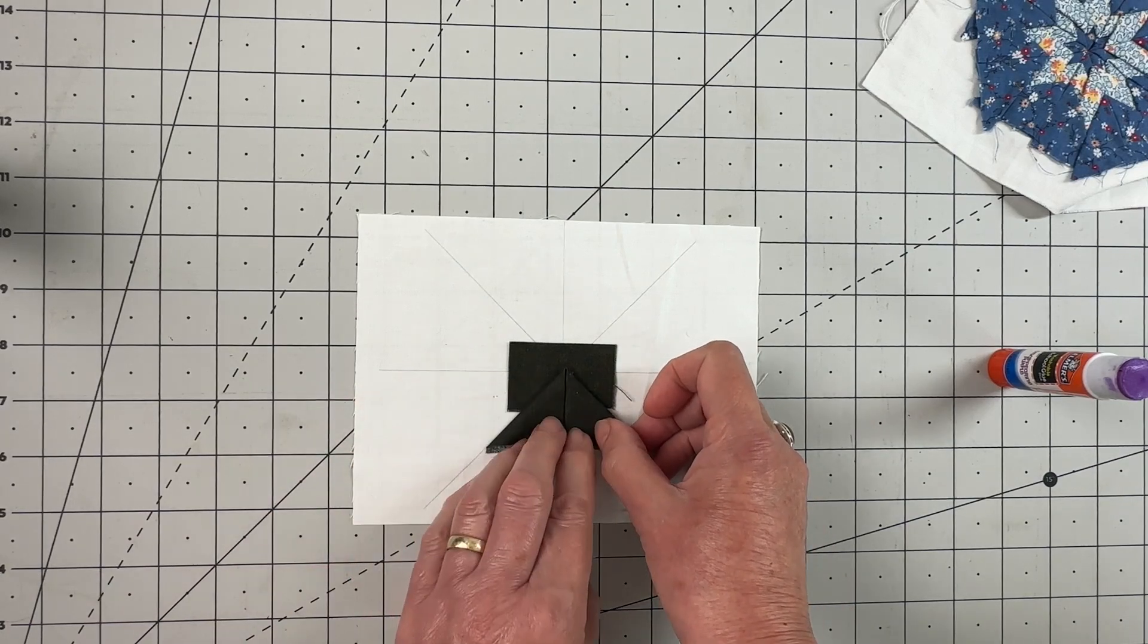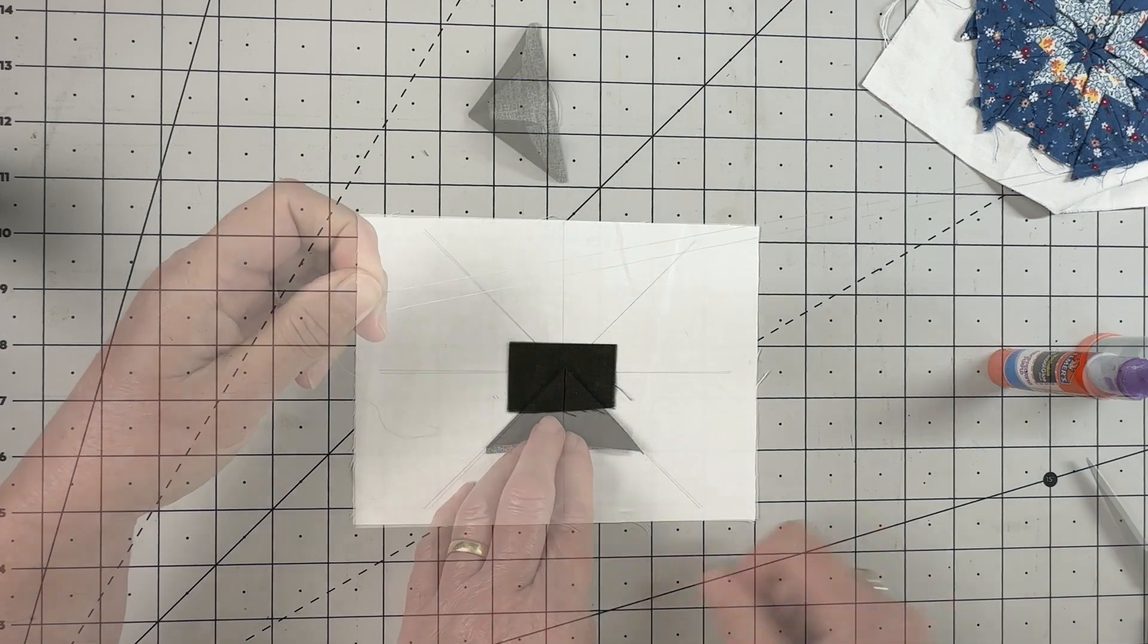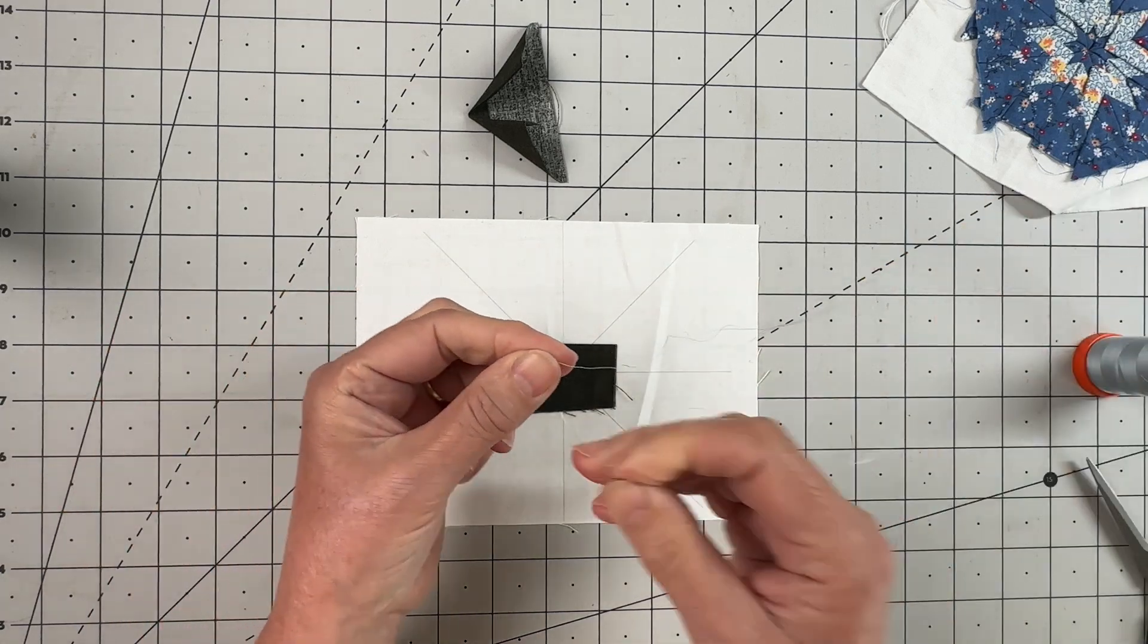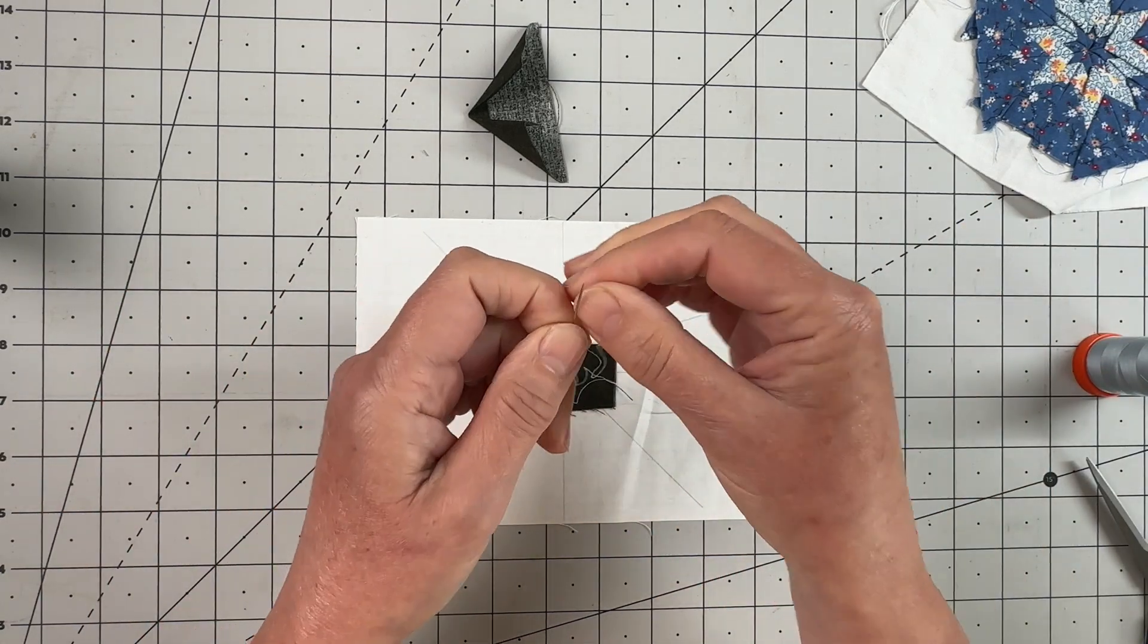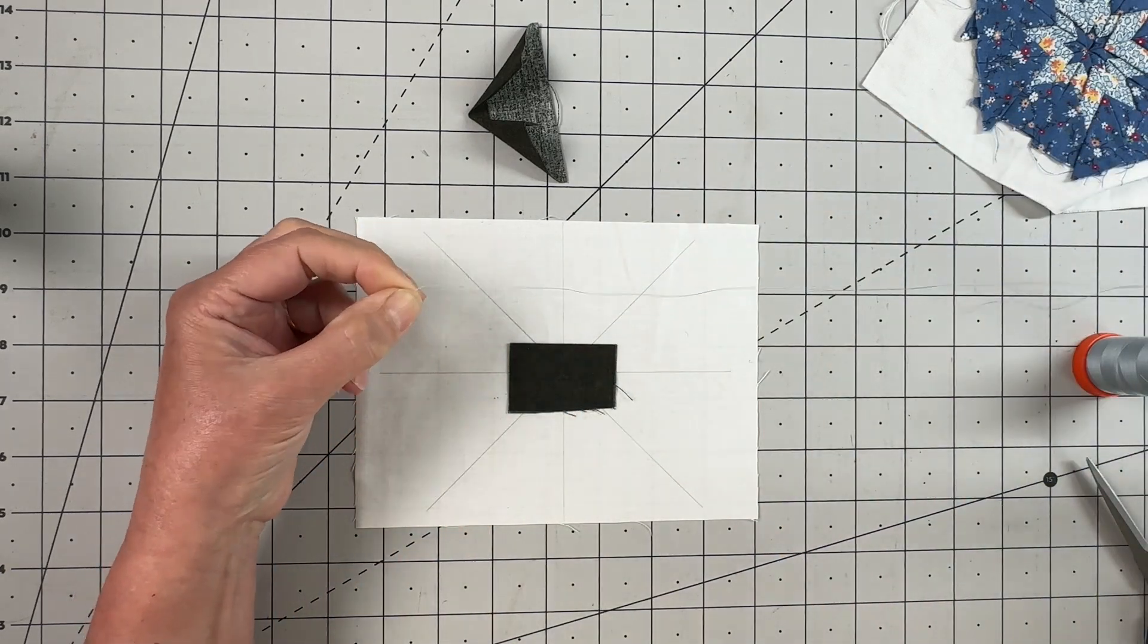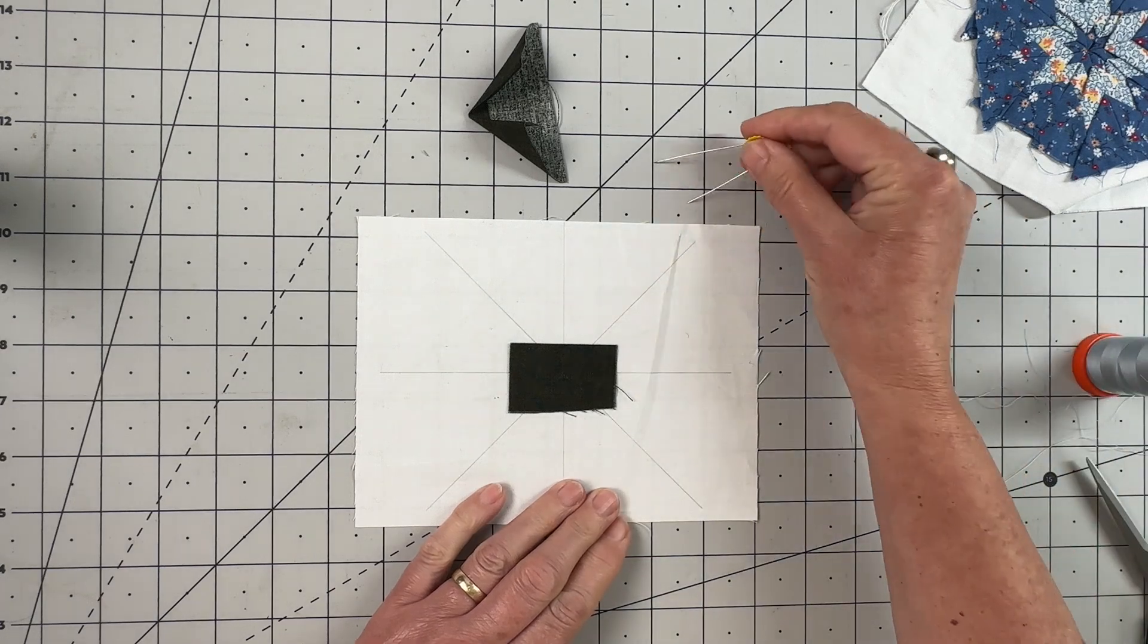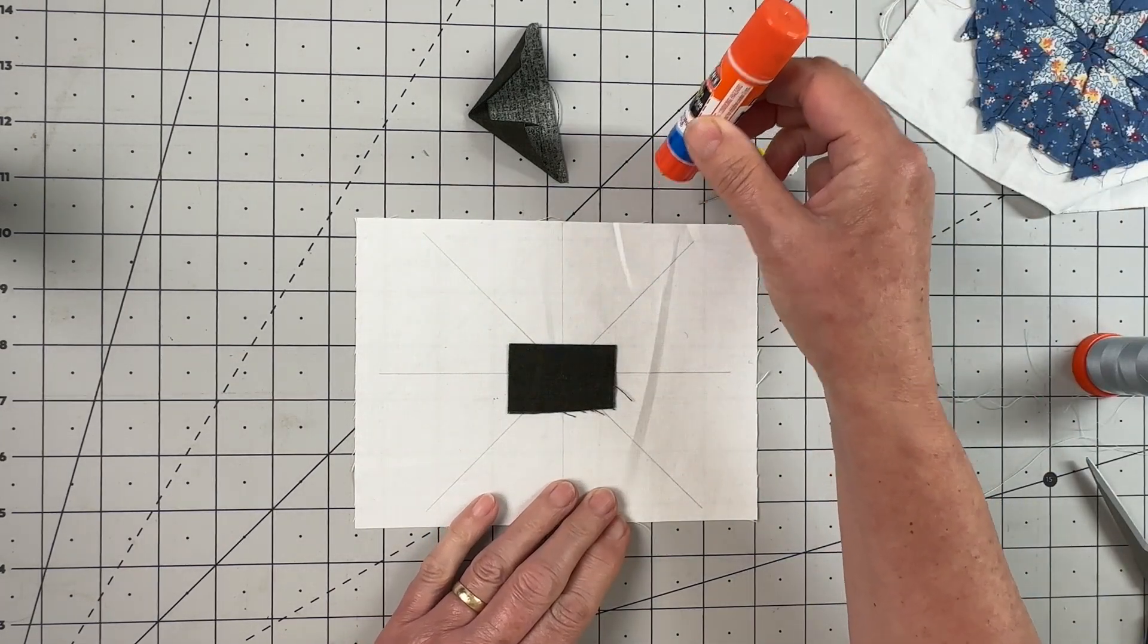Taking your needle and thread, we're going to use a single strand of thread and we're going to put a knot in the end of it to secure it. At this point, you can use pins or you could also use your Elmer's glue stick, whichever you prefer.